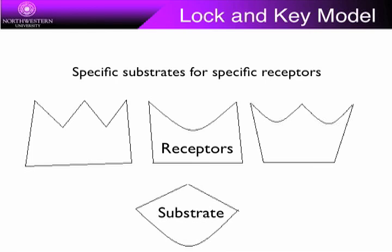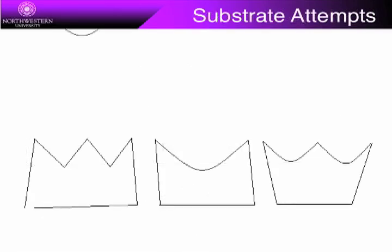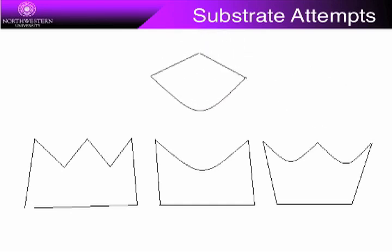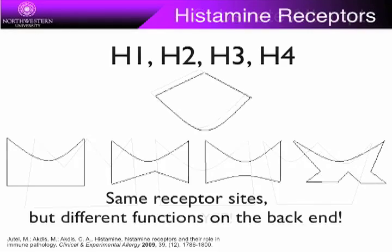Histamine interacts with receptors embedded in cell membranes. This can be understood by the lock and key model of protein receptors. The substrate, or the incoming molecule, acts like a key that only works for a very specific lock — the receptor. In this case, the histamine is the substrate for various histamine receptors. If a receptor is built for a different molecule, the histamine will not be able to bind to that receptor. There are four receptors for histamine: H1, H2, H3, and H4. Histamine fits into each one, but they have different functions on the other end.